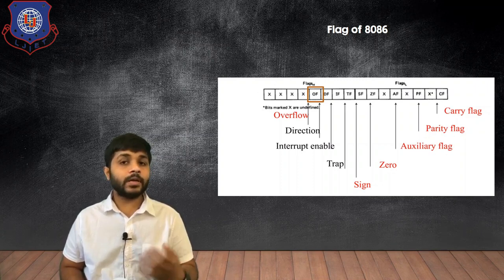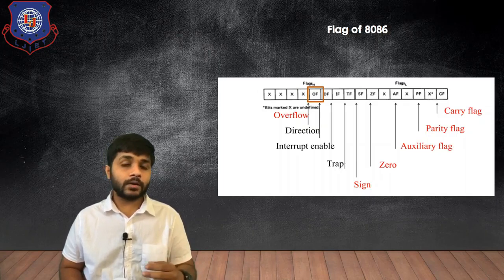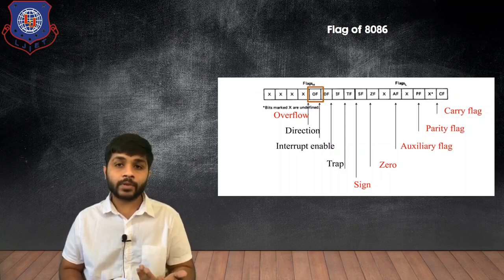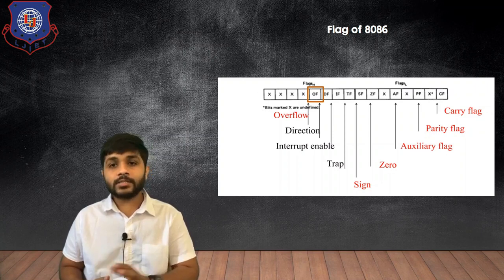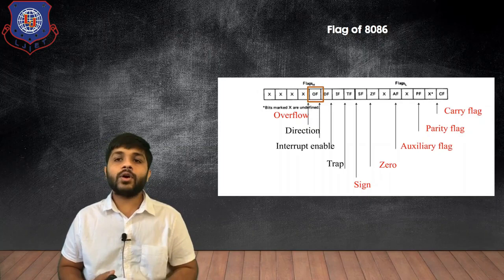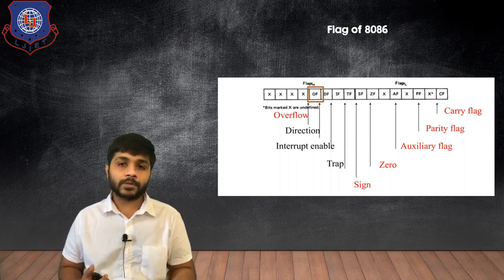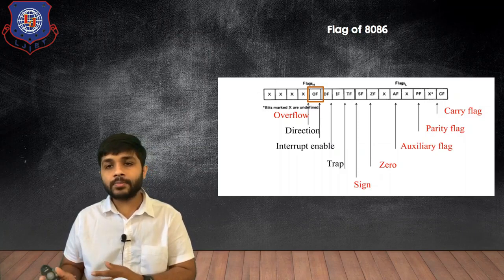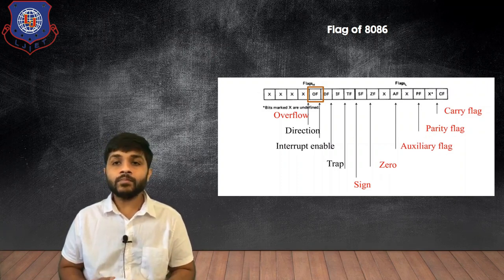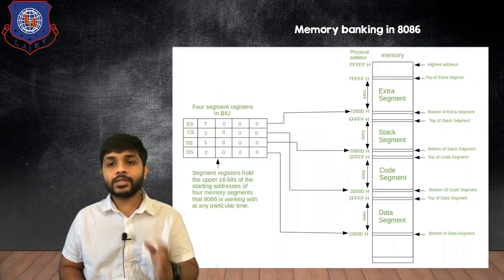The Overflow Flag is set when an arithmetic operation produces an incorrect result — for example, adding two negative numbers and getting a positive answer, or adding two positive numbers and getting a negative answer. The remaining bits of the 8086 flag register are reserved for development purposes and are not yet defined, but there is a possibility that some flags will be added in the future.